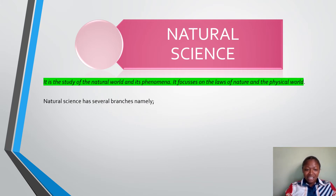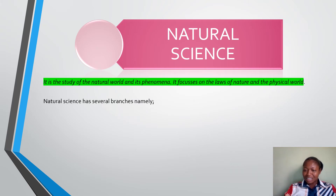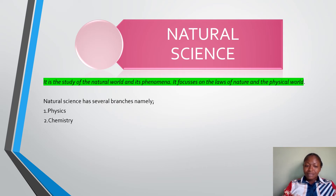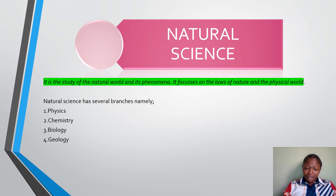Natural Science has several branches, namely: Physics, Chemistry, Biology, Geology, Astronomy, and Meteorology. There are more, but we are taking these six.